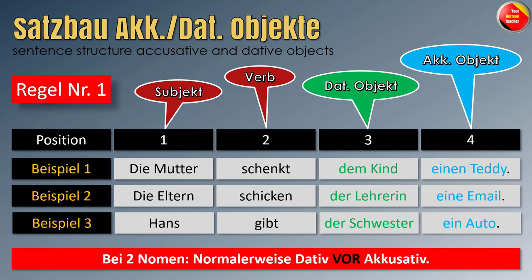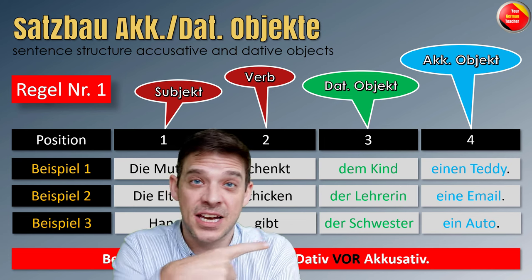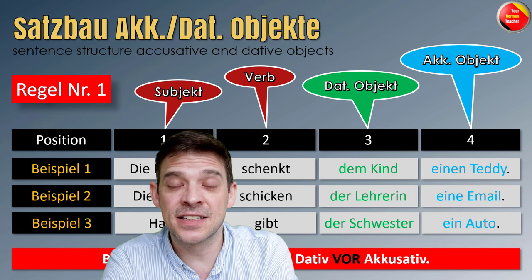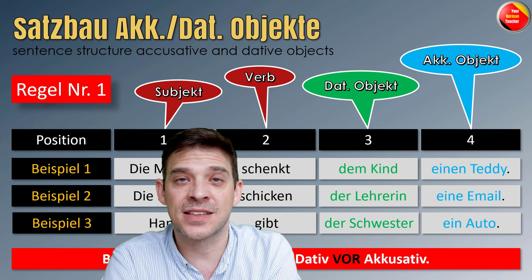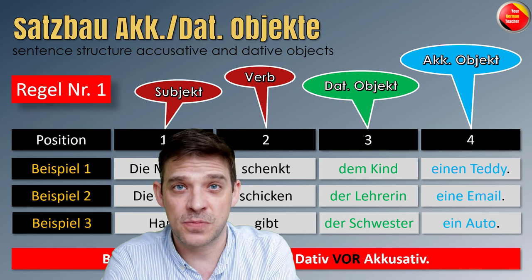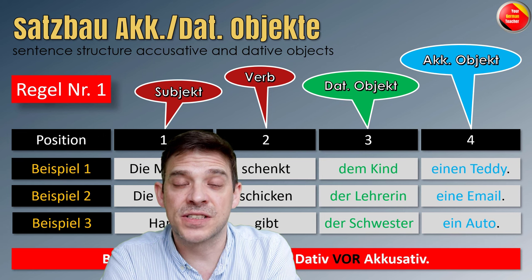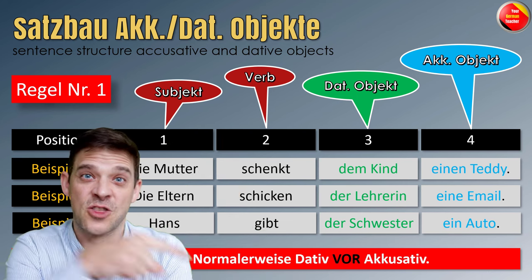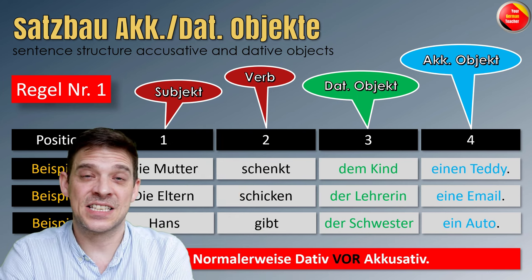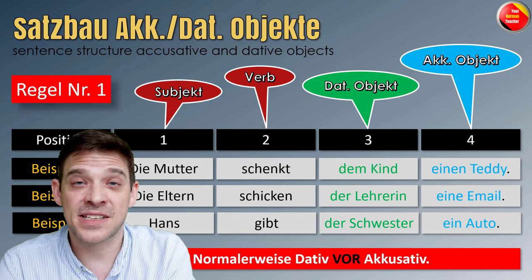If you have two nouns, usually you put dative in front of the accusative. And as you can see here, the accusative object has an indefinite article. If the accusative object has an indefinite article, you always put it behind the dative object. But this 'normalerweise' — this 'usually' — means there are also some exceptions.